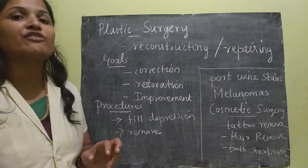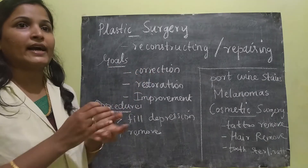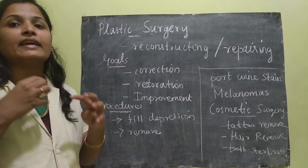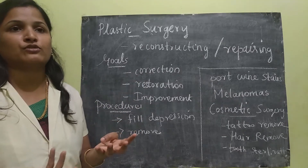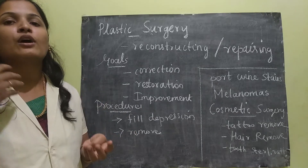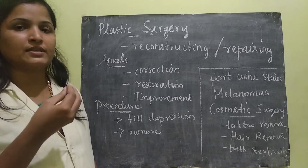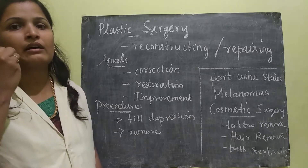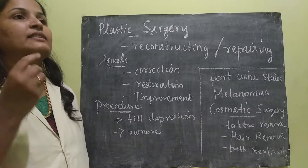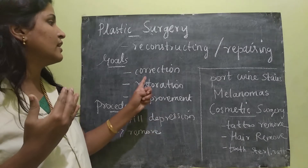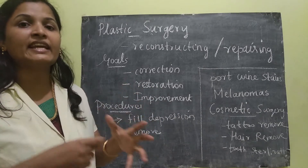The goals of plastic surgery are: first, correction. Correction of any dysfunction or deformation. For example, if the face of any person is deformed, correcting the face is the correction of any deformation.